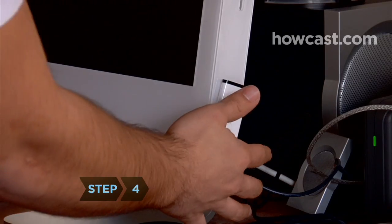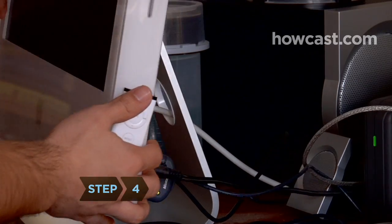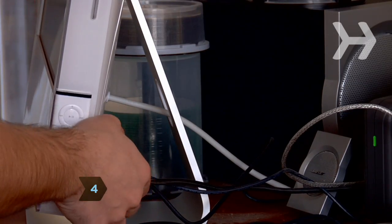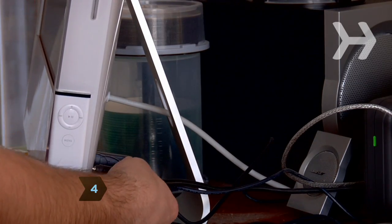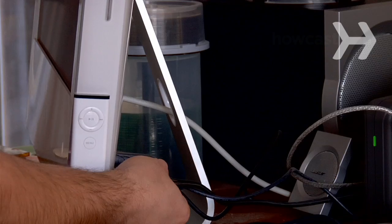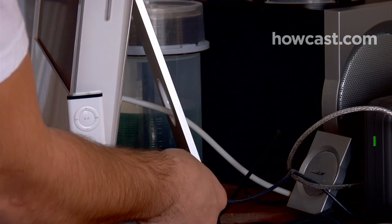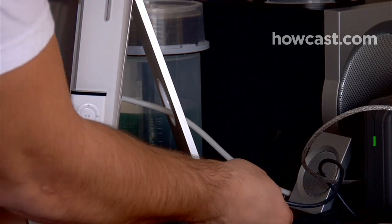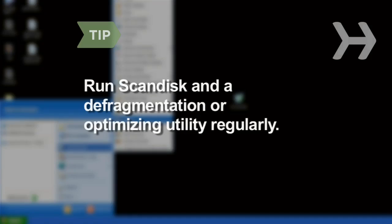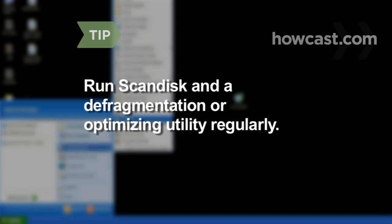Step 4. Check the cables on the back of your computer to be sure the keyboard and mouse are completely plugged in. Try unplugging and replugging each of them. Run ScanDisk on your PC and defragment regularly. Use a defragmenting or optimization utility for a Mac.